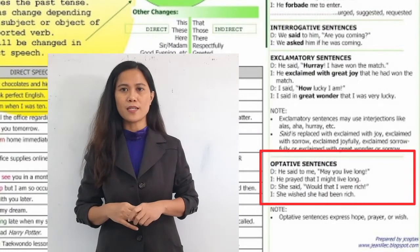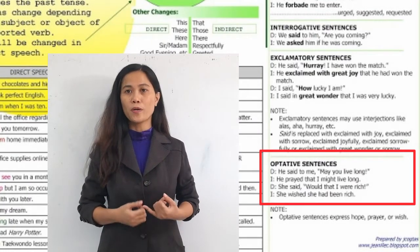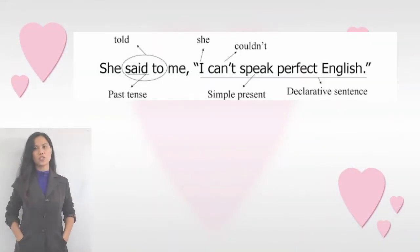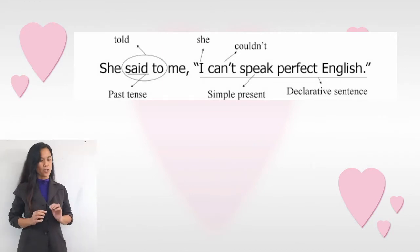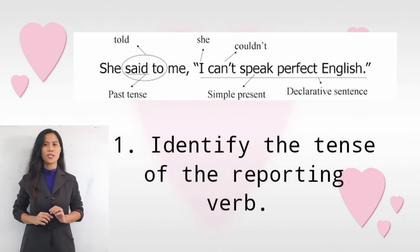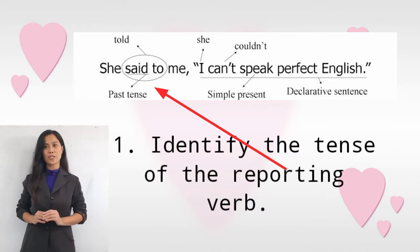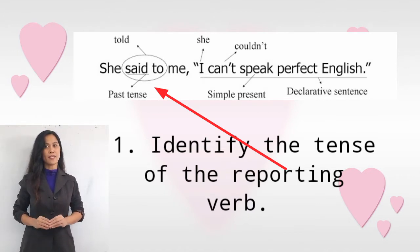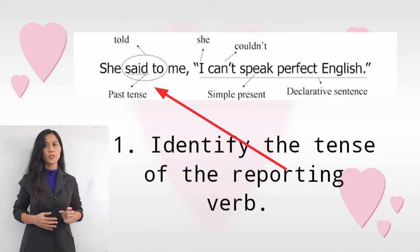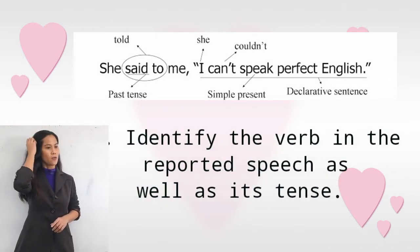The last type is optative sentences — these express whole prayer and wish. Now let's work through an example: 'She said to me, I can't speak perfect English.' The first thing we do is identify the tense of the reporting verb, which is outside the quotation mark. In this sentence, the reporting verb is 'said,' which is past tense.